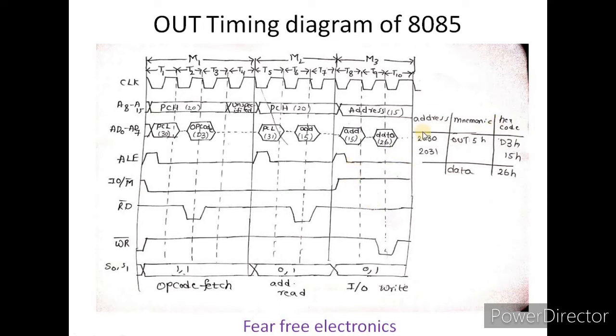The address 15h is now on the bus. When the ALE signal goes low, D0 to D7 works. The accumulator has data 26h, which is now transferred to address 15h. The write signal becomes active for the write process.